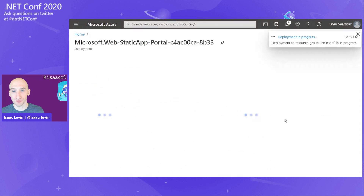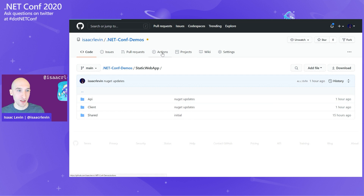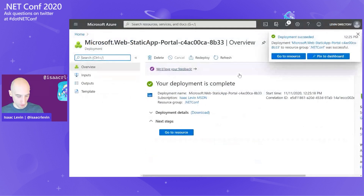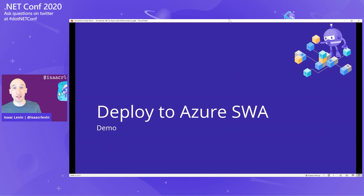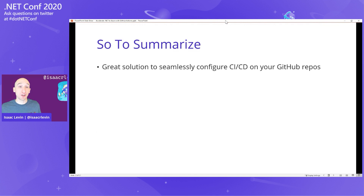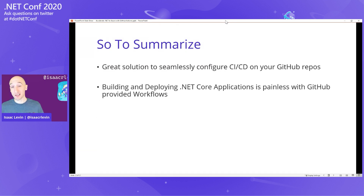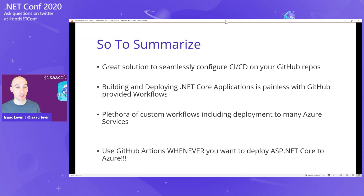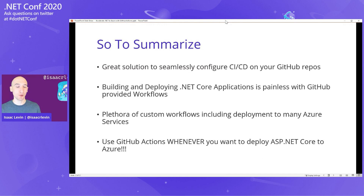That will stand up something cool. To summarize: GitHub Actions are a great solution to seamlessly configure your CI/CD with your Git repos. Building and deploying .NET Core apps — especially ASP.NET Core apps — is super painless with GitHub-provided workflows and the runner that exists inside the GitHub portal, plus the ability to view logs. You have a plethora of custom workflows including deployment to many Azure services. Use GitHub Actions whenever you want to deploy ASP.NET Core to Azure — it's super easy. I showed you three different ways to do it in 20 minutes.